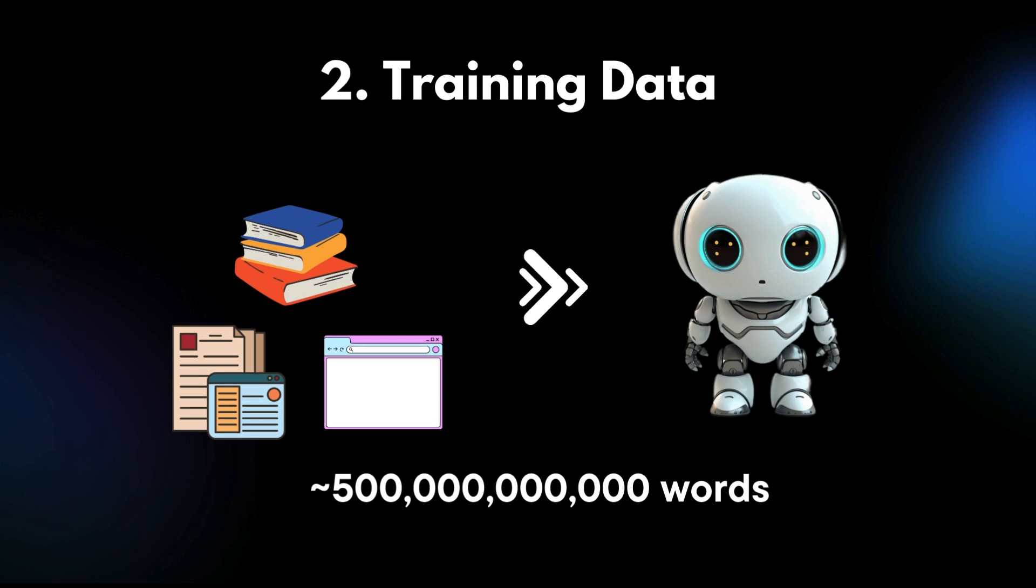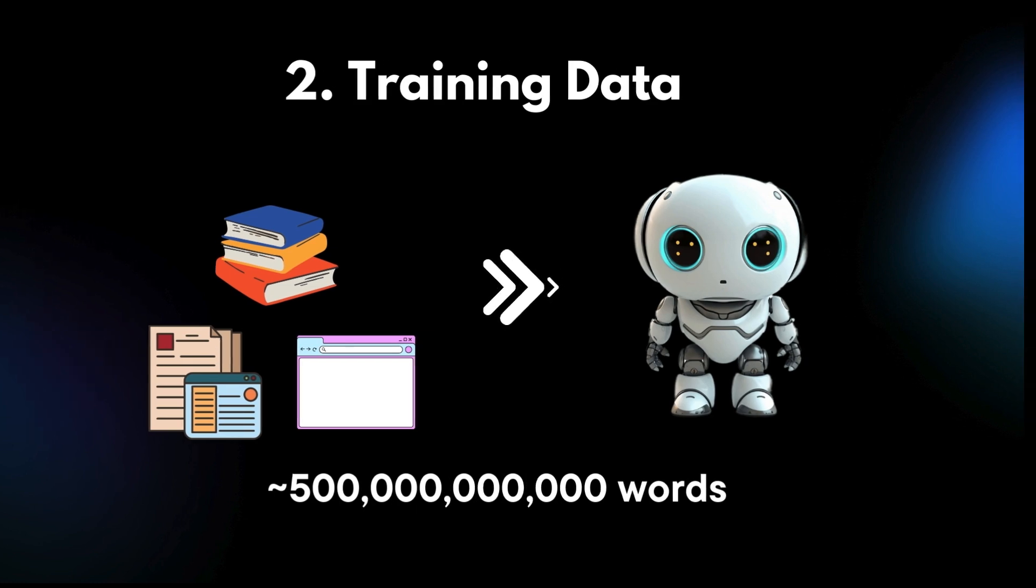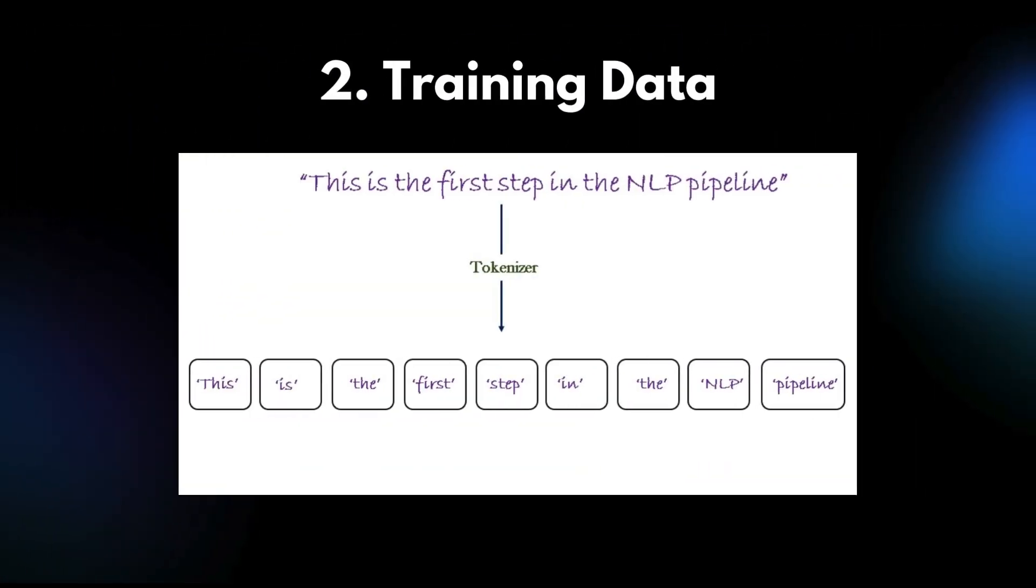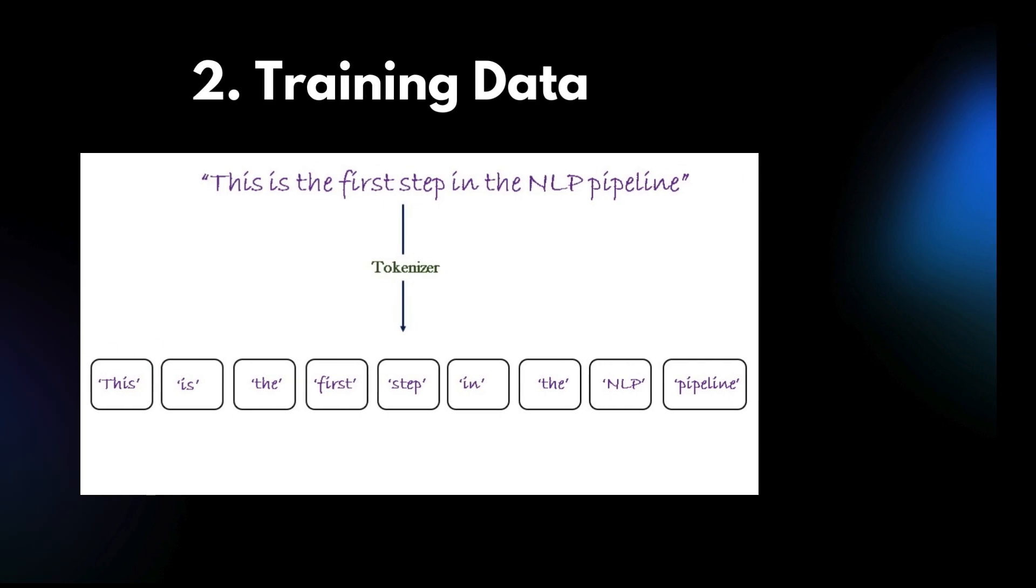ChatGPT is trained on vast amounts of data from the internet, which includes books, articles, websites and more. These inputs are broken down into tokens which are pieces of words. Tokenization allows the model to handle various languages, symbols and special characters effectively.